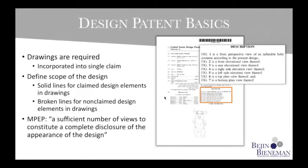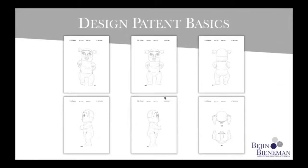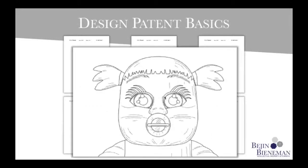You don't just need to include drawings — you need to include enough drawings. The MPEP says you must include a sufficient number of views for a complete disclosure. Our example, the inflatable baby costume, has seven views: perspective, front, back, right, left, top, and bottom. So this inflatable baby costume is basically nightmare fuel — but at least it is well-illustrated nightmare fuel.